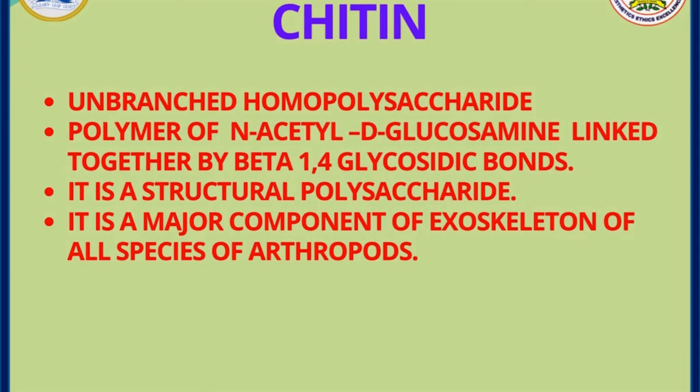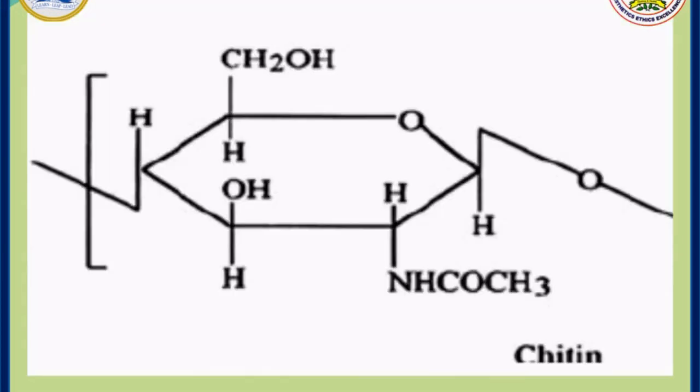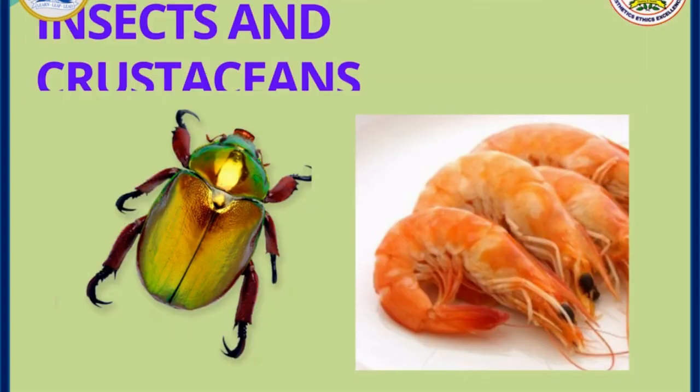Chitin is an unbranched homopolysaccharide made of N-acetyl-D-glucosamine linked by beta-1,4 glycosidic bonds. It forms the major component of the exoskeleton of all species of arthropods. Here we can see the structure of chitin and its role as an exoskeleton in animals like prawns and some insects.